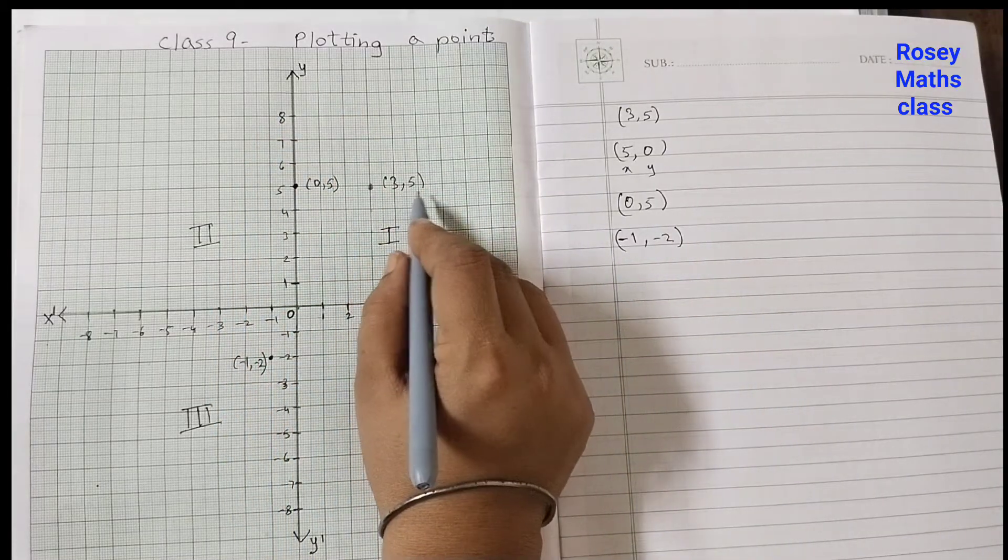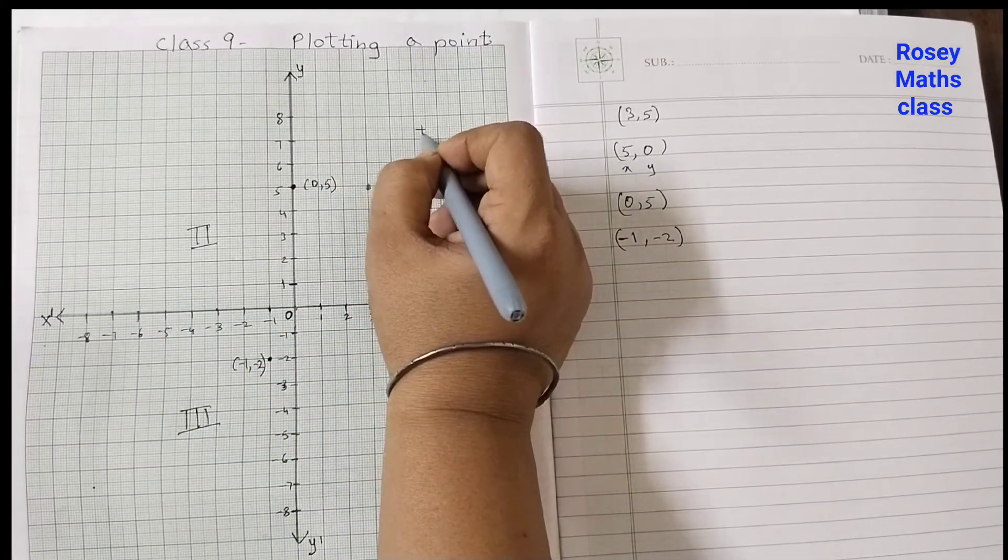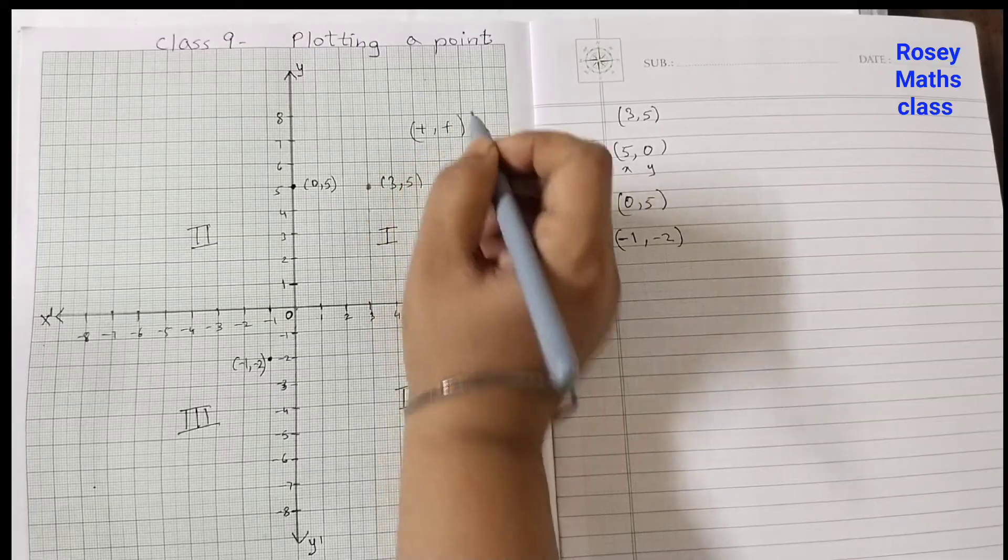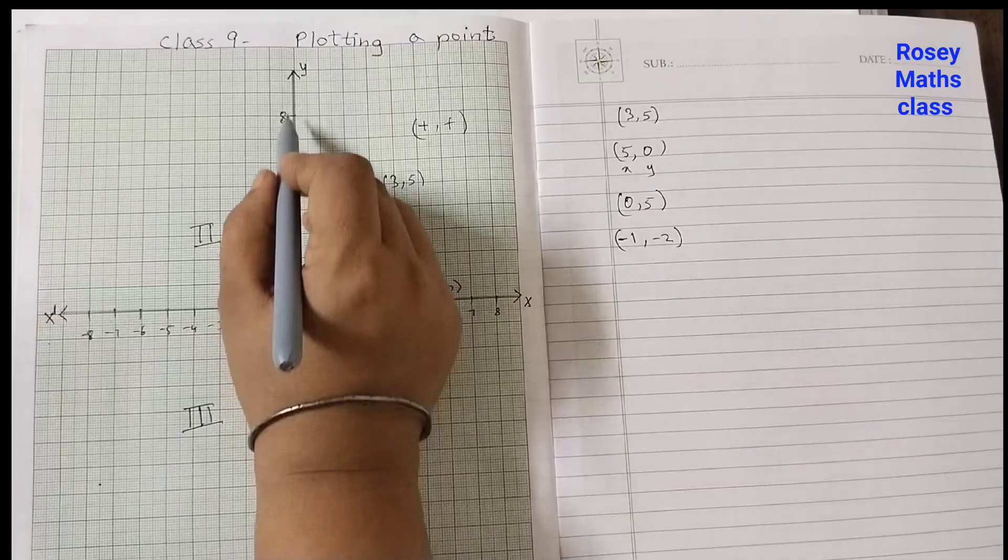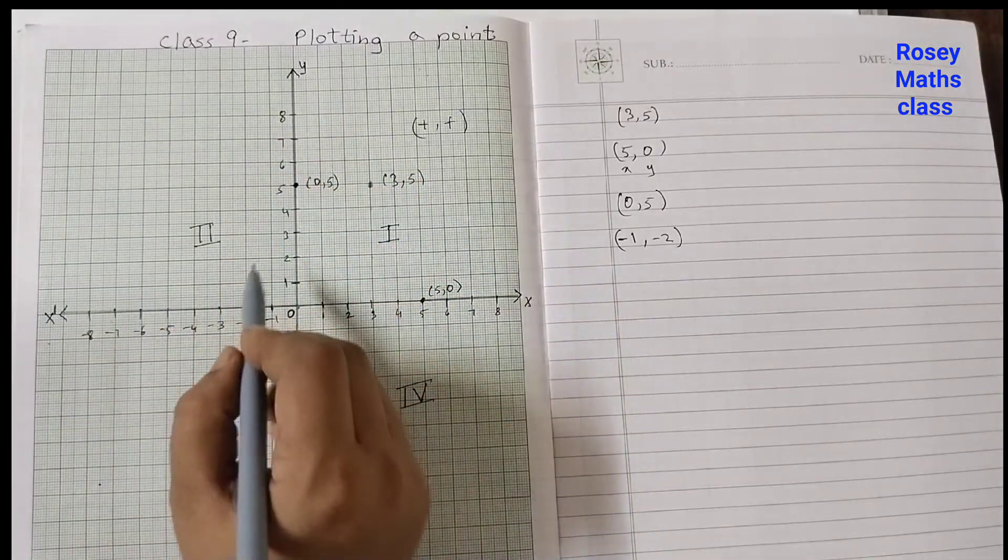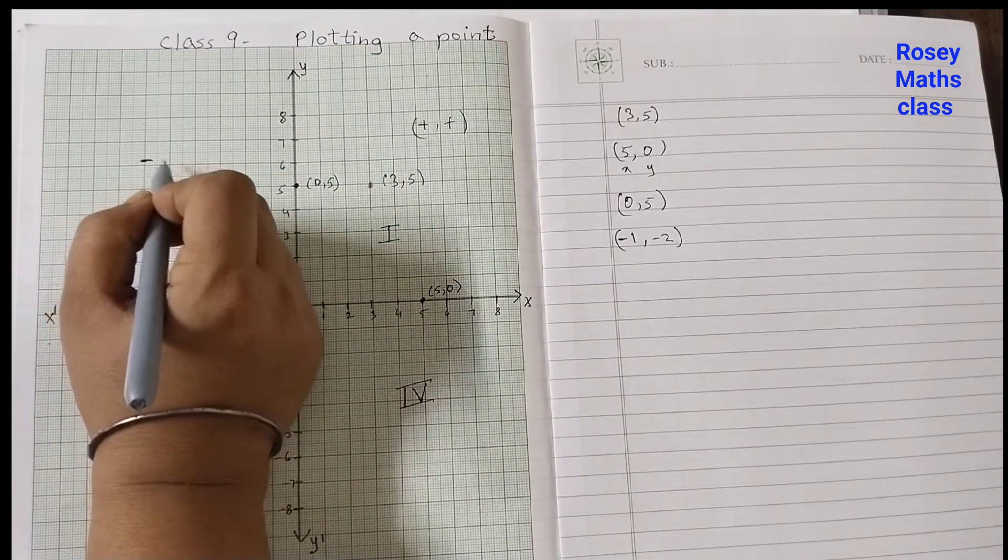Here you will always find positive numbers because this is positive side and this is also positive side. So you will find always positive numbers. Let me write here: positive, positive. Here the x values are all negative and y values are all positive. In this quadrant, so you will get a negative number first and a positive second.